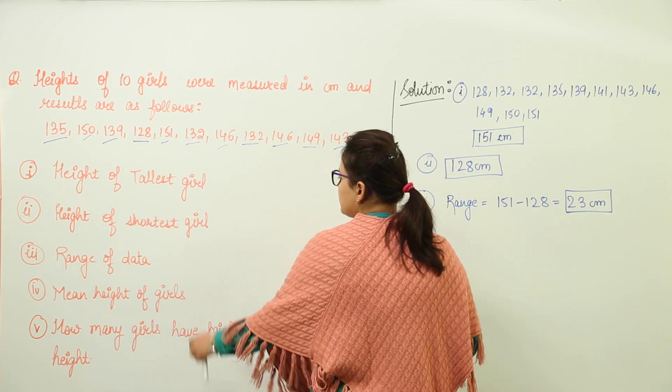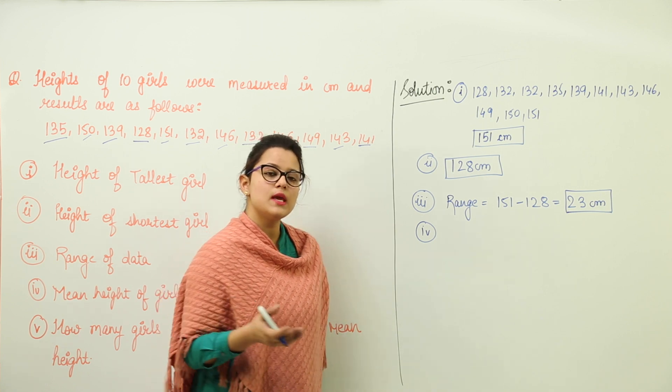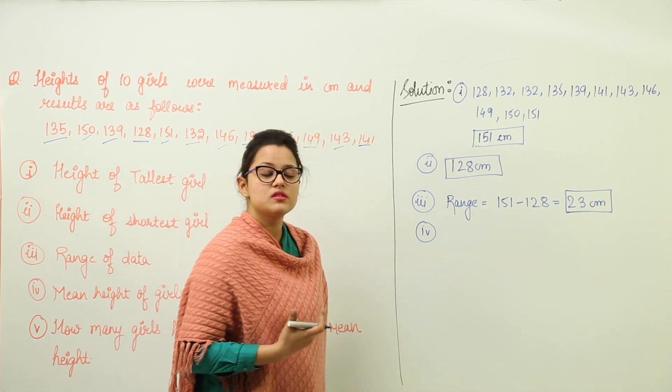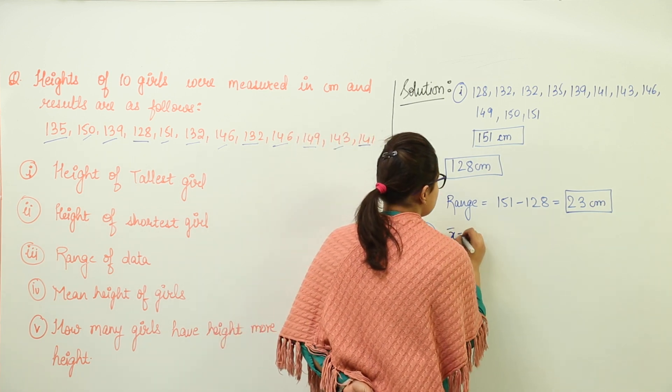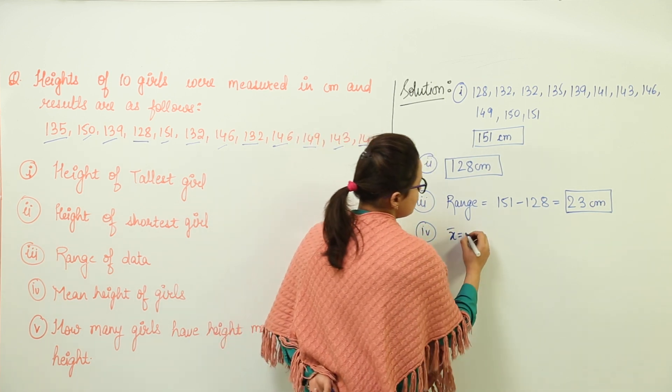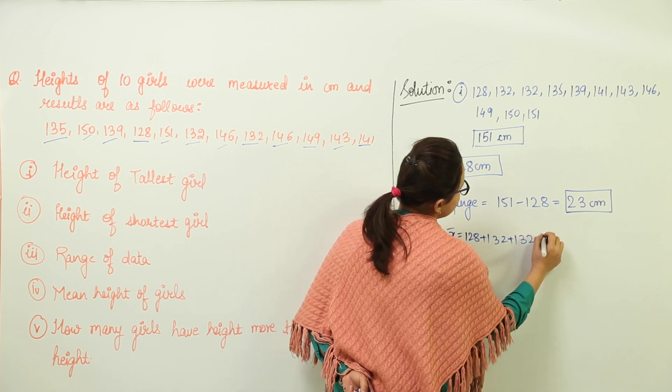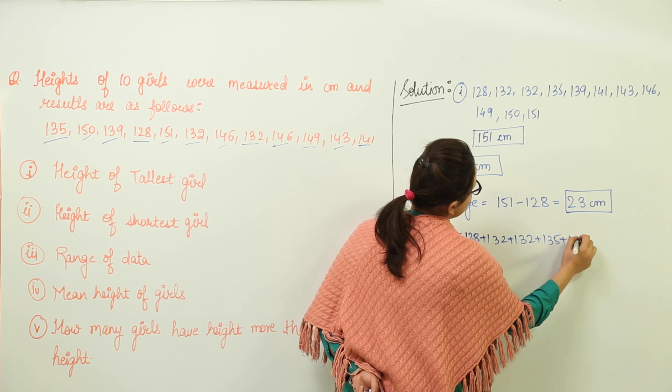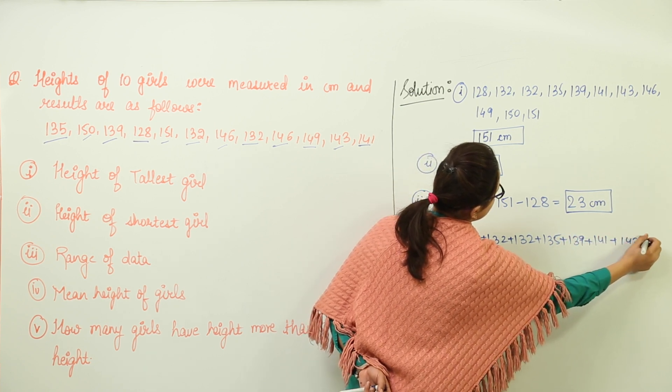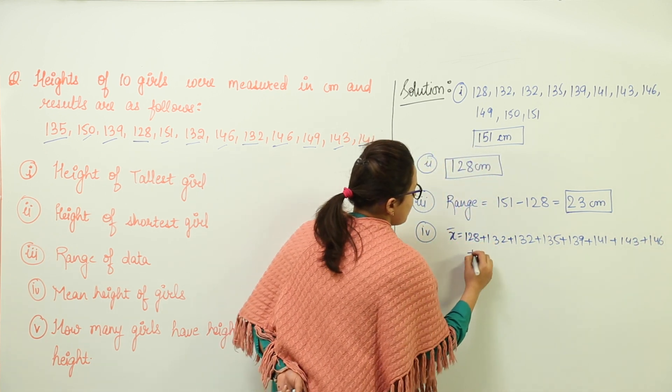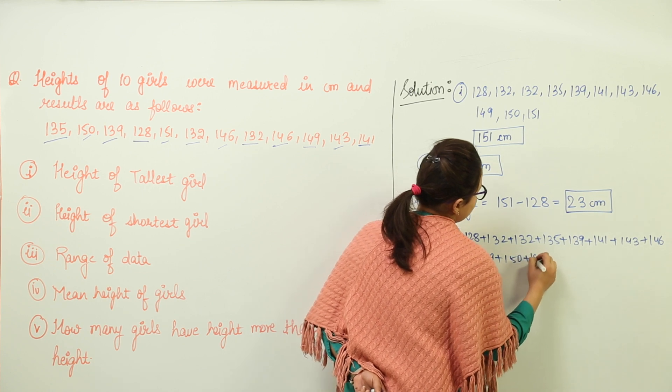Next, the fourth question is you have to find the mean height of girls. Now mean height is the same - that is, sum of observations divided by number of observations. So we will calculate this by adding up all the observations: 128 plus 132 plus 132 plus 135 plus 139 plus 141 plus 143 plus 146 plus 149 plus 150 plus 151.